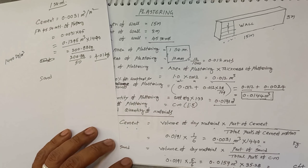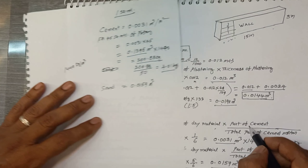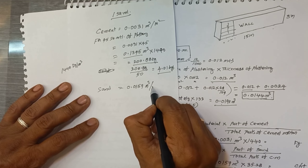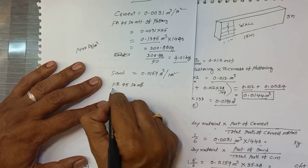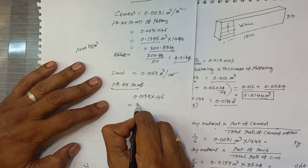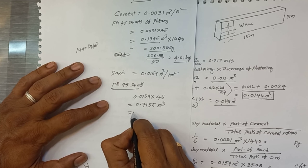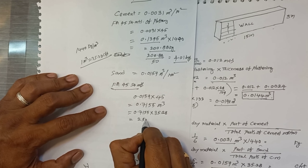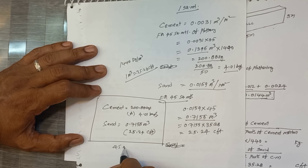For 1 square meter, sand requirement is 0.0159 cubic meters. For 45 square meters: 0.0159 × 45 = 0.7155 cubic meters. Sand is sometimes measured in cubic feet, so converting: 0.7155 × 35.28 = 25.24 cubic feet. This is the required quantity of sand for 45 square meters of plastering.